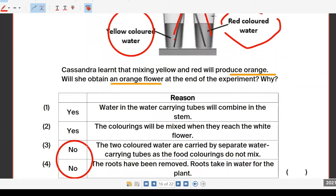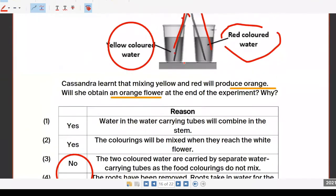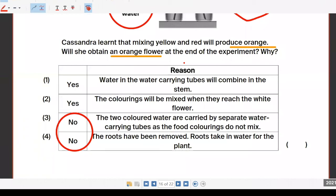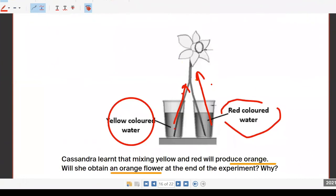Will she obtain an orange flower? No. Both of you are wrong because they will not mix at all. The tubes when they cut are both different tubes. What's the answer? Answer is three, because the two colored water tubes are separate by water carrying, do not mix at all. That's the reason why your flower will become red and yellow, it will not become orange.